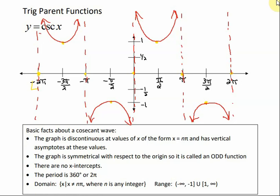The period is 360 degrees or 2 pi, the same period as its reciprocal function. The domain is x such that x is not equal to n times pi, where n is any integer. The range is from negative infinity up to negative 1, union with 1 to infinity. So the parts between negative 1 and positive 1 don't exist in the range — from negative infinity to negative 1, and from positive 1 to positive infinity is where the range exists.